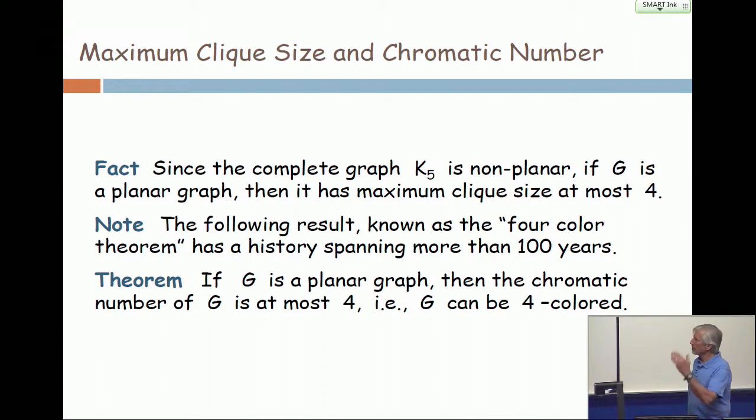Now at the bottom, we've talked about a result which is called the four-color theorem. And it has a fascinating history and I want to tell you a bit about it. But let's talk about what the result is. The result is that if you have a planar graph, it can be colored with four colors. Its chromatic number is at most four.